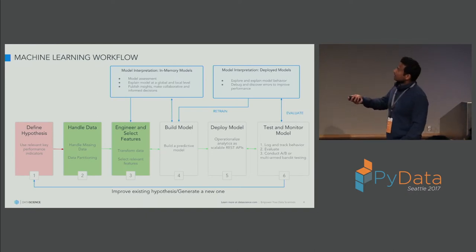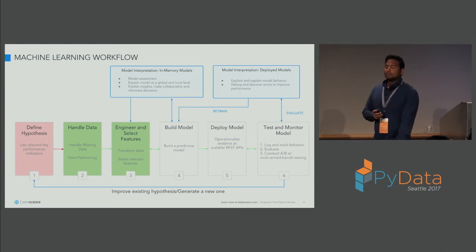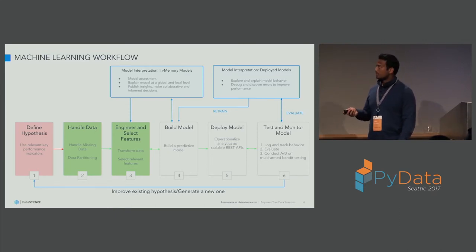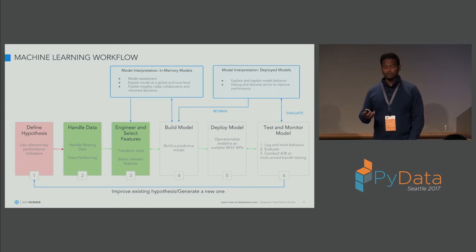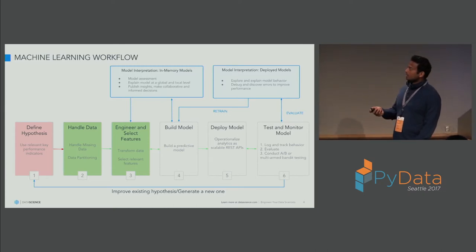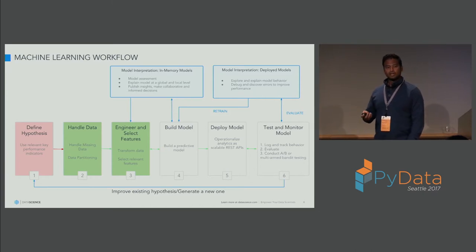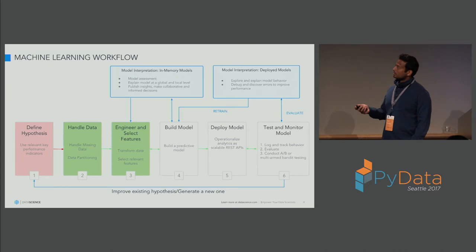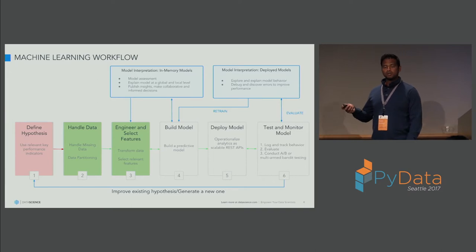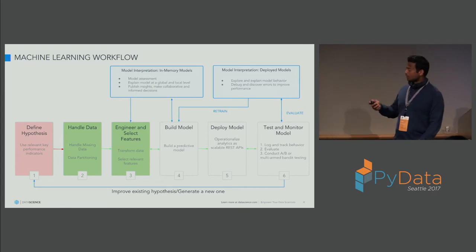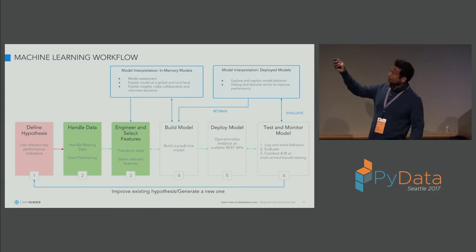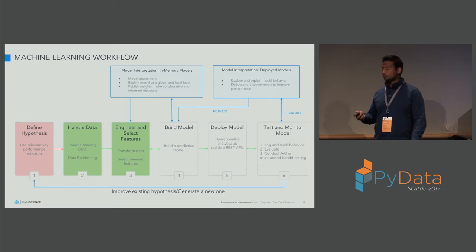I'm sure most of you are familiar with the typical analytical workflow. We start with first defining some hypothesis or use case that we are trying to solve. Then we handle the data — transform it, do some ETL operations. Then there's feature engineering and feature selection. Then we build a model, deploy it in some form if we want to operationalize it, and then get to testing and monitoring. There are two other boxes related to how we effectively evaluate and interpret models.